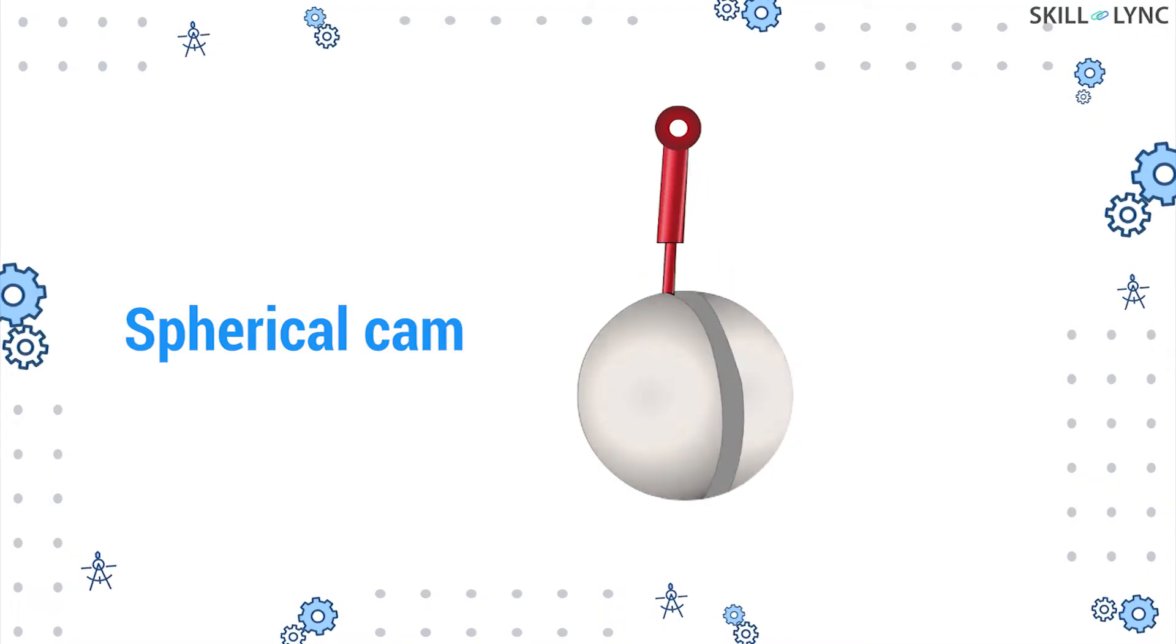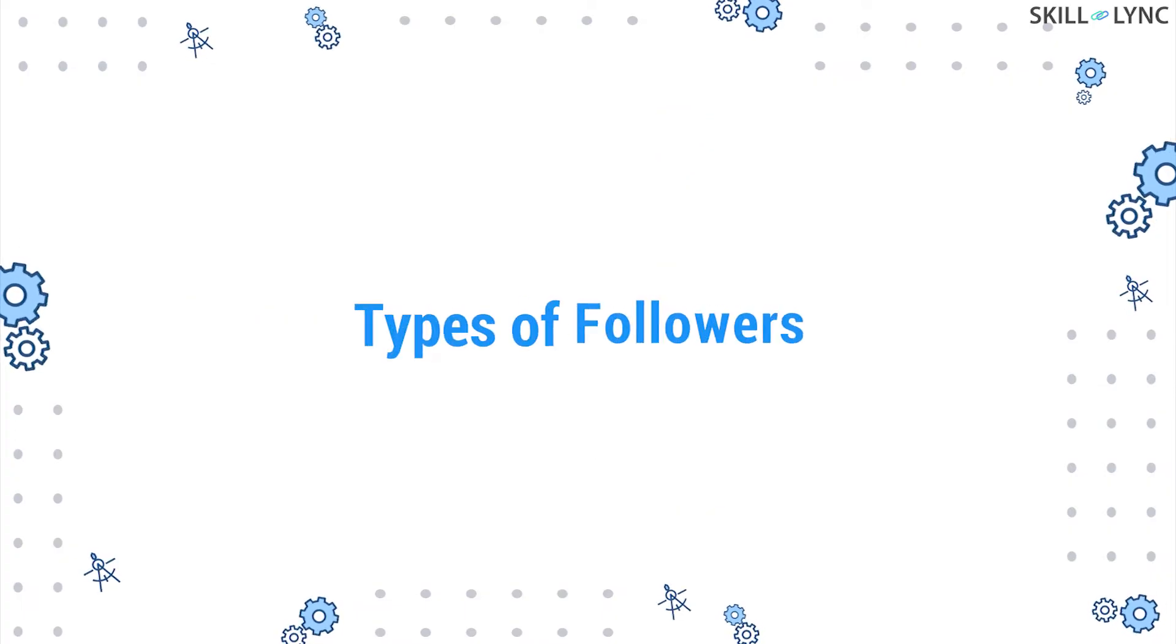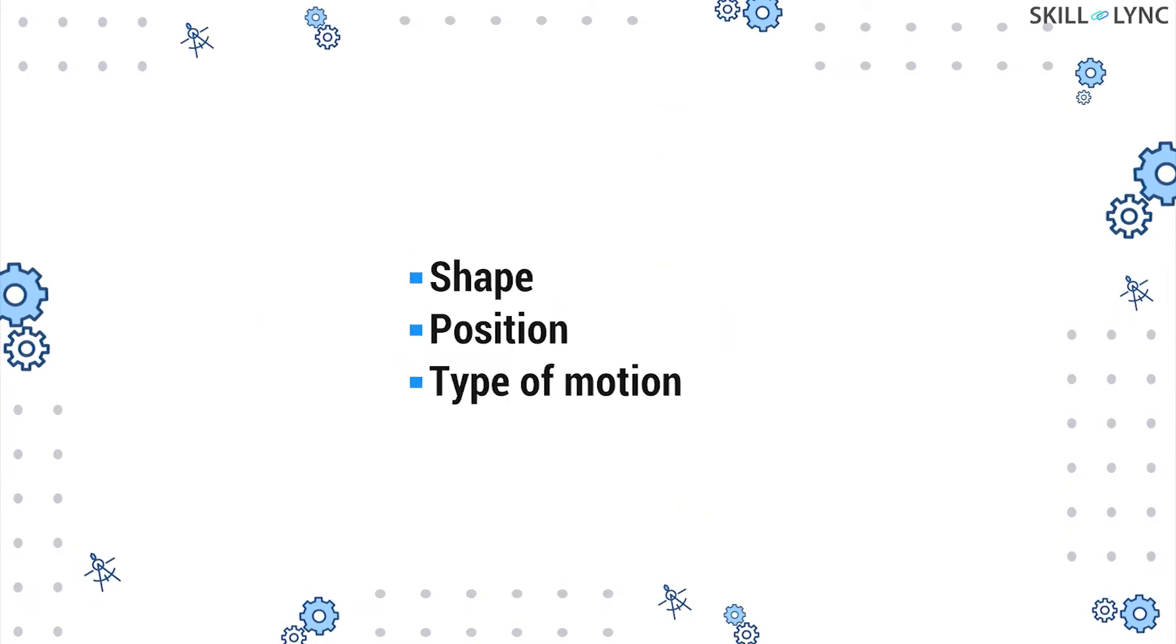With this, we have seen the different types of cams. Now, let's move on to the types of followers. The followers can be classified into several types based on their shape, position, and type of motion.